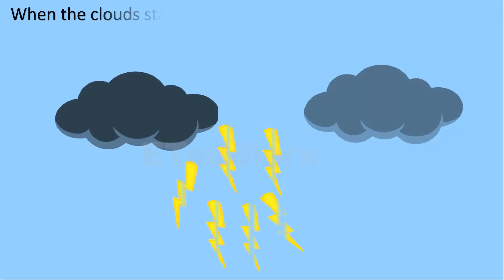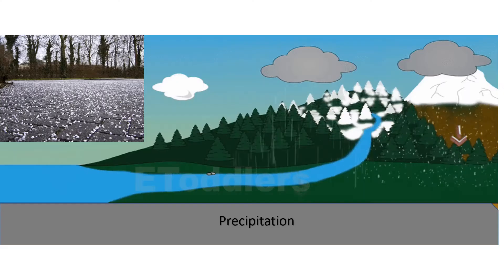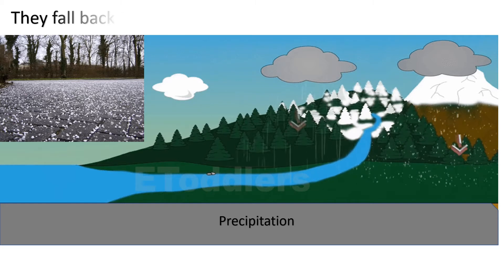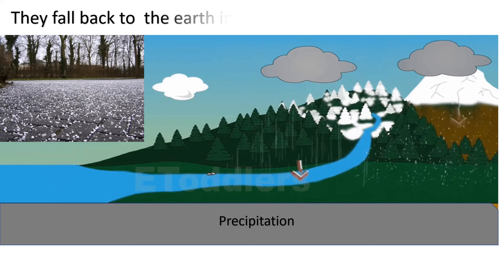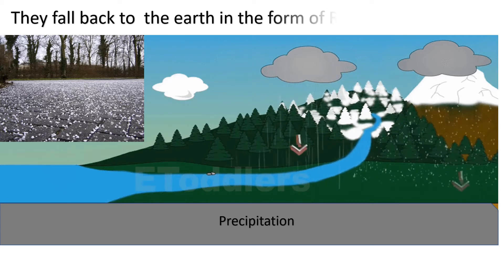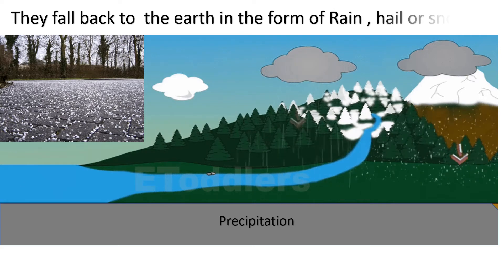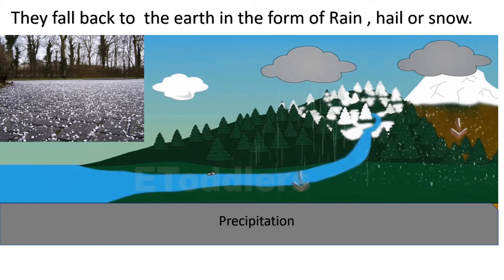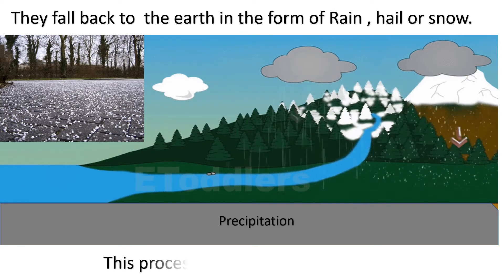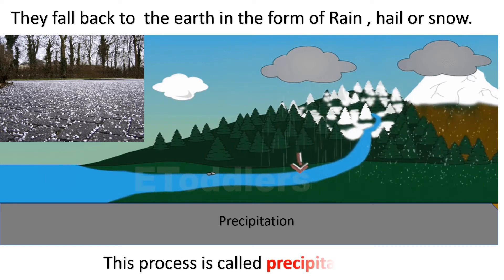When the clouds start getting heavy and cannot hold the water droplets anymore, they fall back to the earth in the form of rain, hail or snow. This process is called precipitation.